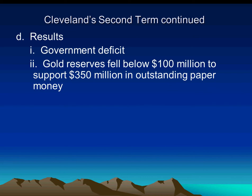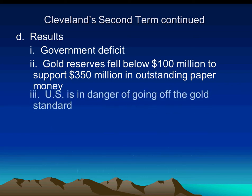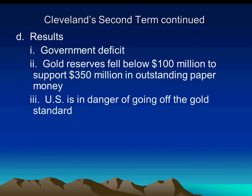In terms of Cleveland's second term in office — he's a Democrat — the gold reserves fell below $100 million to support $350 million in paper money. The problem with the paper money was it wasn't accepted by people overseas, so if you were trading with them, they wanted to be paid off in gold.